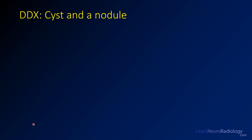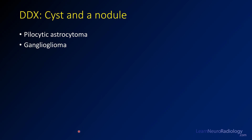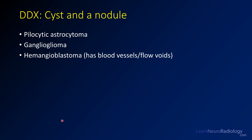When you have a cyst and a nodule, this is a classic radiology appearance that you'll hear about a lot — it's sort of a keyword and you may see it on tests. The most common is pilocytic astrocytoma, which is common in children and young adults, often in the posterior fossa. Ganglioglioma can also have cyst and a nodule and is more likely to be in the temporal lobes. Hemangioblastomas are frequently in the posterior fossa, typically have blood vessels and flow voids, and are more common in patients with von Hippel-Lindau. Finally, PXAs — pleomorphic xanthoastrocytomas — can also have a cyst and a nodule.